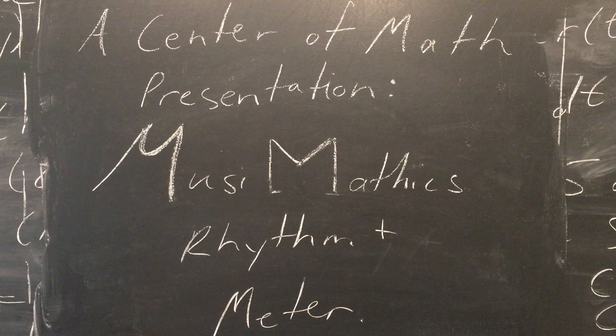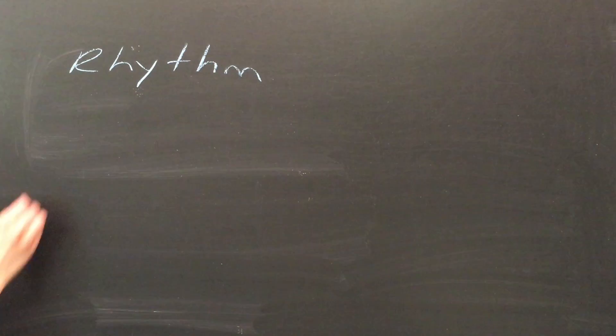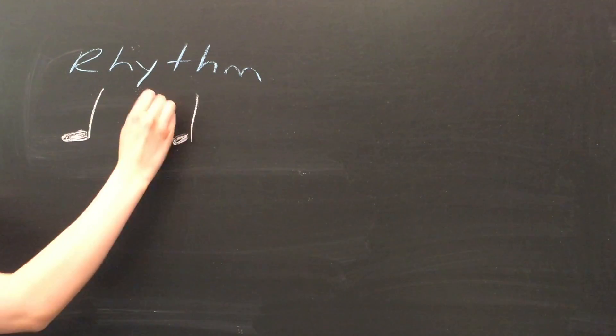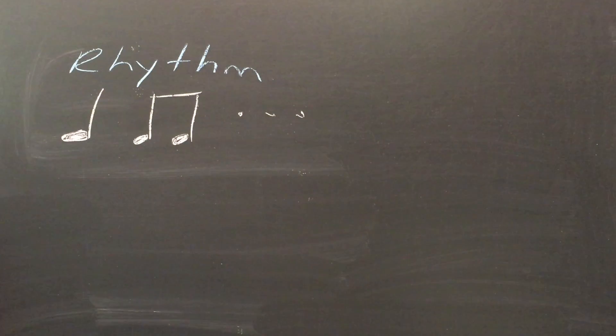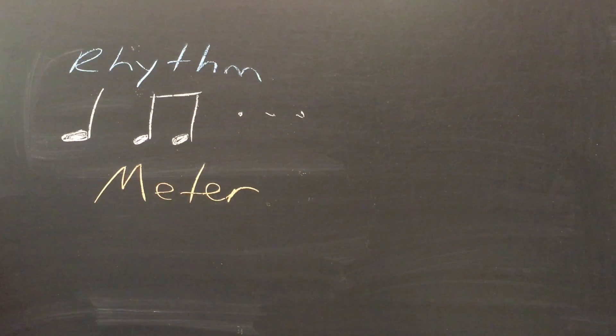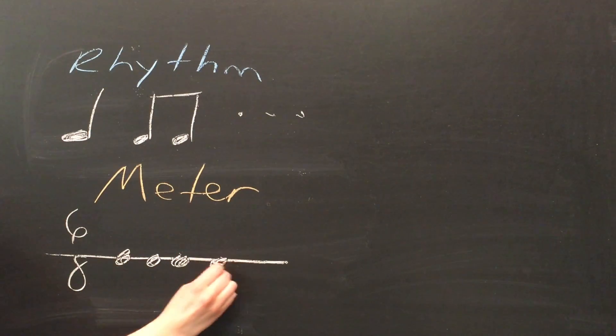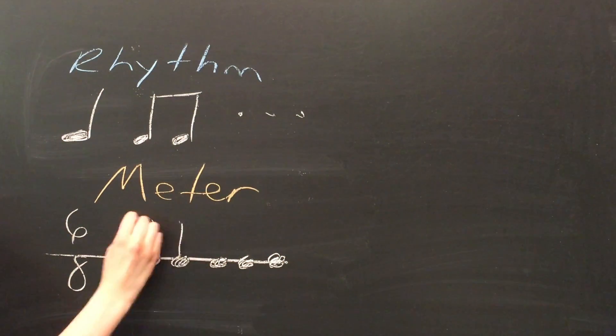Before we begin, we should establish a formal definition of rhythm and meter. Rhythm in music is the recurrence or movement marked by the regulated succession of strong and weak elements, or beats. Rhythms might be something as simple as a quarter note or something as complicated as syncopated 32nd note triplets. According to Oxford Music Online, meter is the grouping of beats into a recurring pattern defined by accentuation.